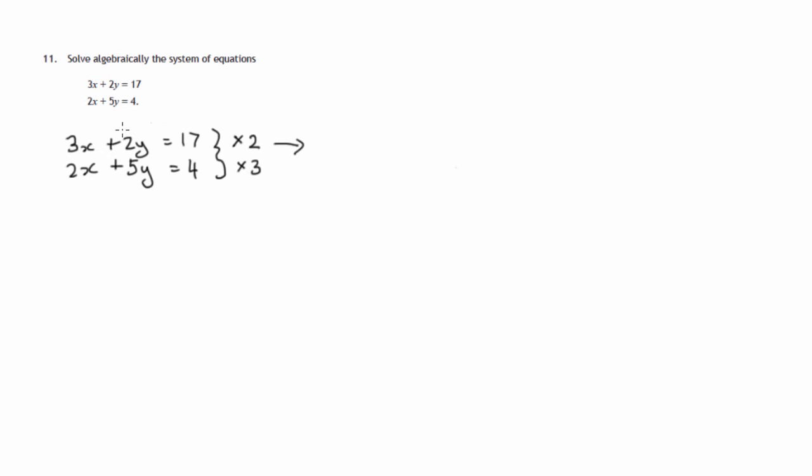Now remember, two equal things. If you're doubling, you must double both sides, everything on both sides. So a couple of 3x's would be 6x, a couple of 2y's would be 4y, a couple of 17's would be 34. Similarly, this equation, two equal things, multiply both sides by 3. So 3 lots of 2x, that's 6x. 3 lots of 5y, 15y. And 3 lots of 4, 12.